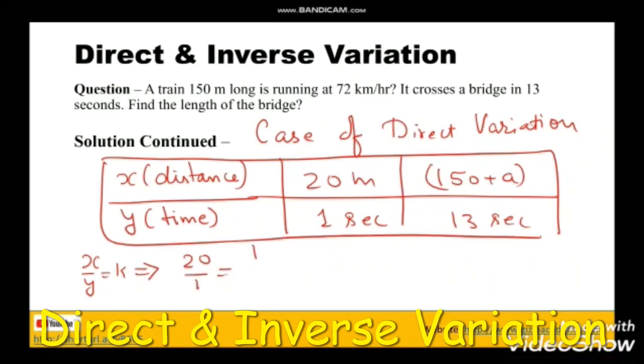We shall cross multiply and we will get 20 into 13, that is 260, is equal to 150 plus a. Now a will be equal to 260 minus 150, that is 110 meters.